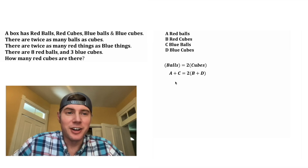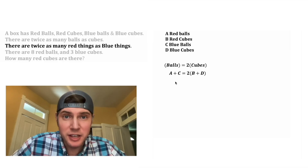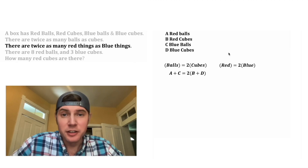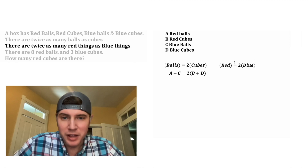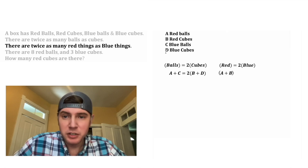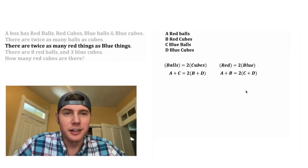Now let's focus on the third sentence: there are twice as many red things as blue things. The number of red things is twice as much as the number of blue things. The red things are going to be the red balls plus red cubes, so that'll be A plus B. And the blue things would be the blue balls plus the blue cubes, so that'll be C plus D.